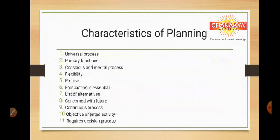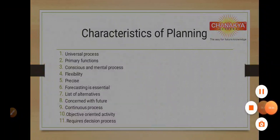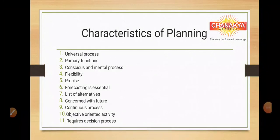So by now I hope you are clear on the meaning of planning. Planning means, to achieve any target or objective, the sequence of steps, policies, and rules we follow — that is known as planning. Planning is completely an intellectual process, meaning it requires mental exercise. We have to think of various options and alternatives available, and then select the best possible alternative.